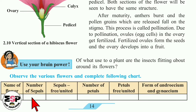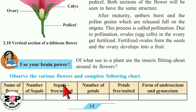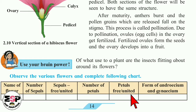Now observe various flowers and complete the following chart. Collect some flowers and write their names in the first column. Then observe each flower carefully and note the number of sepals in the second column, whether the sepals are free or united in the third column, number of petals, and the form of androecium and gynoecium.